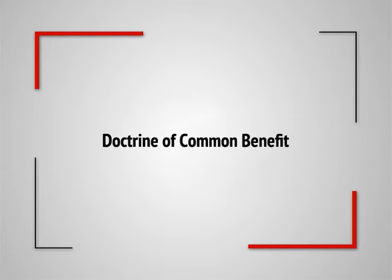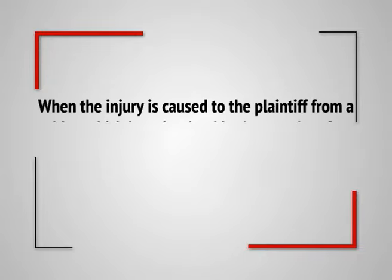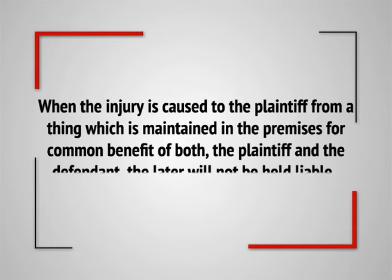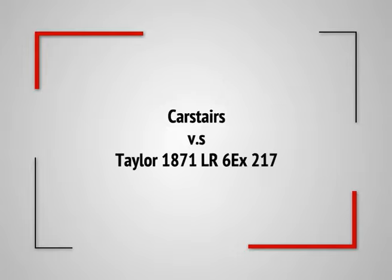There is a very important doctrine given by the English courts known as the doctrine of common benefit. When the injury is caused to the plaintiff from a thing which is maintained in the premises for the common benefit of both the plaintiff and the defendant, the defendant will not be held liable. In Kearstair v. Taylor, 1871, the defendant, an occupant of the upper story of a building, was held not liable to the plaintiff occupant of the lower story for damages caused by escape of water from a water box in the upper story, where a rat gnawed a hole in the box causing the leakage.